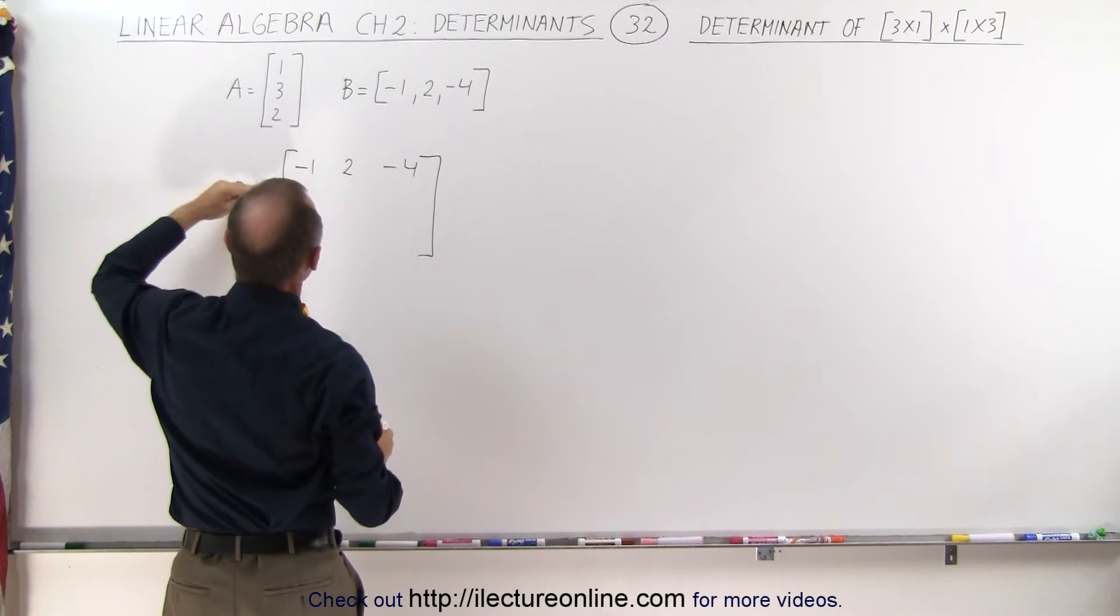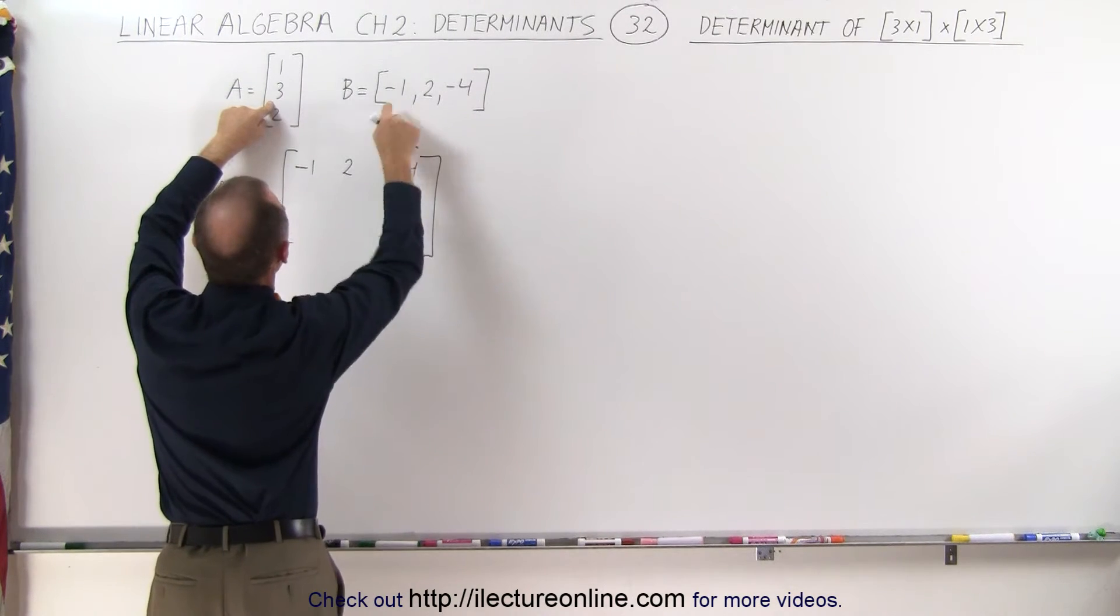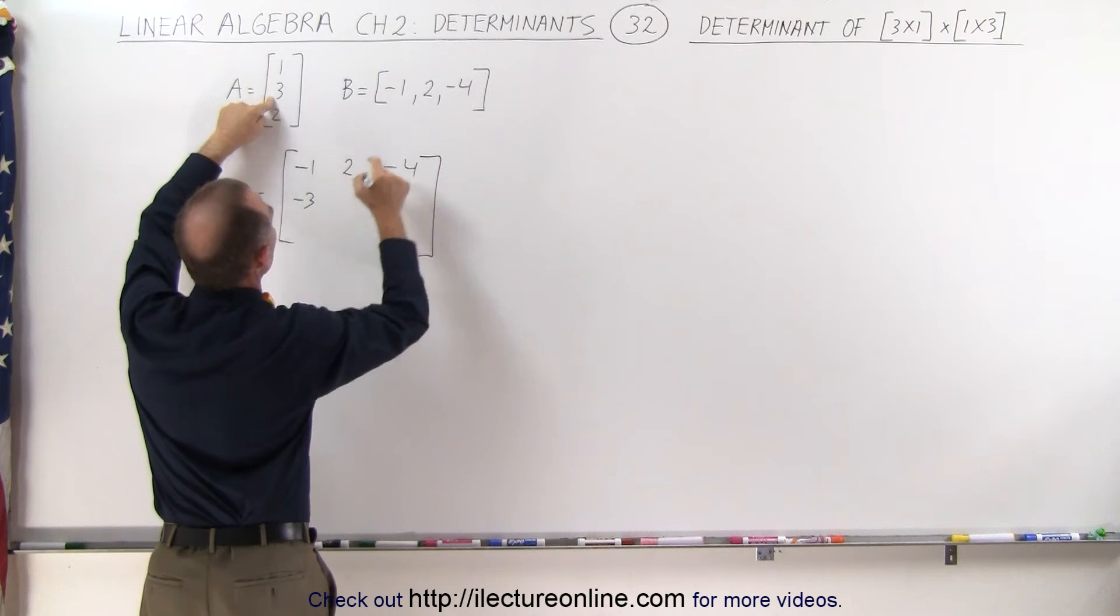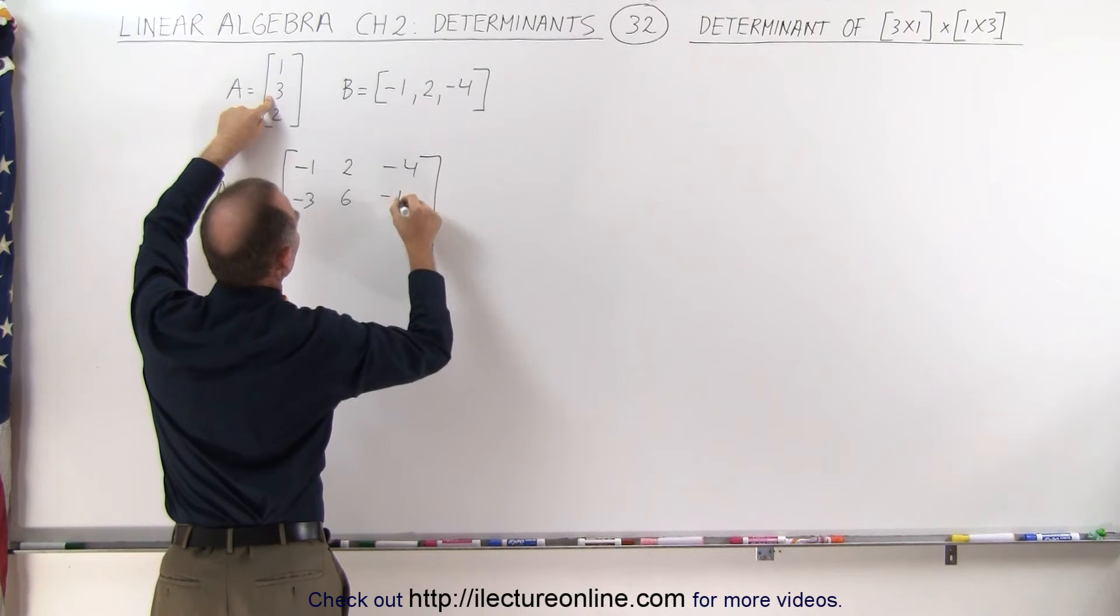Now we go to the second row to get the elements of the second row. So 3 times negative 1 is negative 3, 3 times 2 which is 6, and 3 times negative 4 which is negative 12.